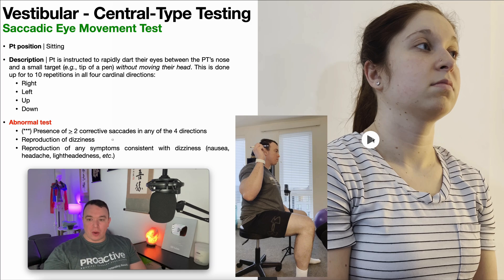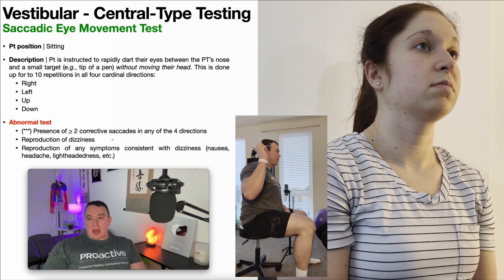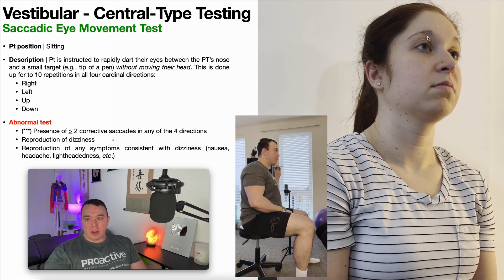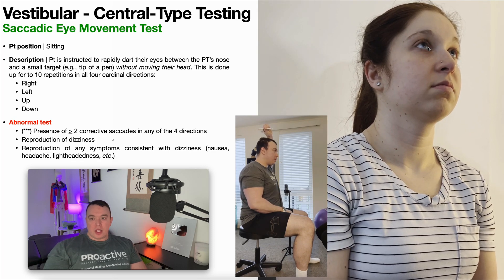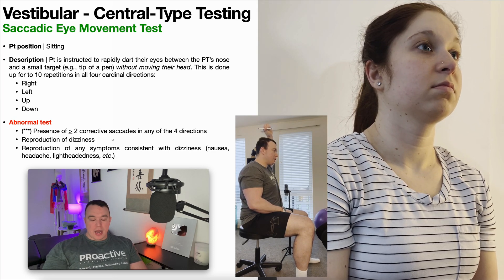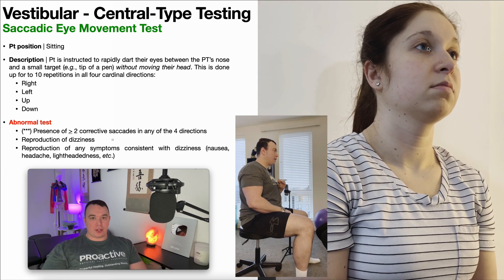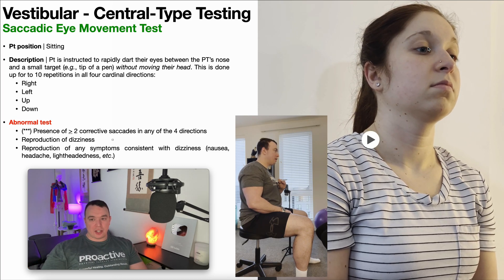In the clip I'm cueing 'nose, pen, nose, pen' — there are many ways to cue that. Notice her eyes make quick saccades from the pen to the nose and back. We're doing the upward direction there. Note that it does not matter which order you assess the four directions; I usually do the horizontal ones first and then the vertical ones.